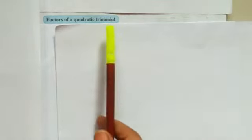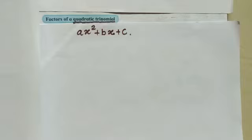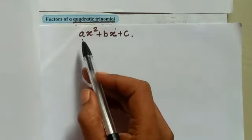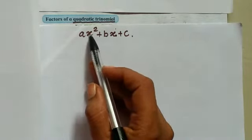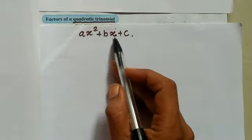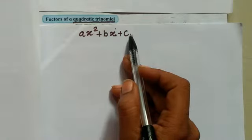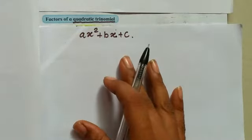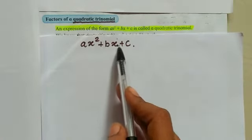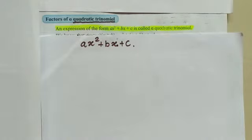Let's understand what is meant by a quadratic trinomial. Here I've taken one example of a trinomial term. This type of expression where the first term has second power (power is 2), the middle term has power 1, and the third section has no variable — this is called a quadratic trinomial. The definition: an expression of the form ax² + bx + c is called a quadratic trinomial. Write this definition in your classwork notebook.